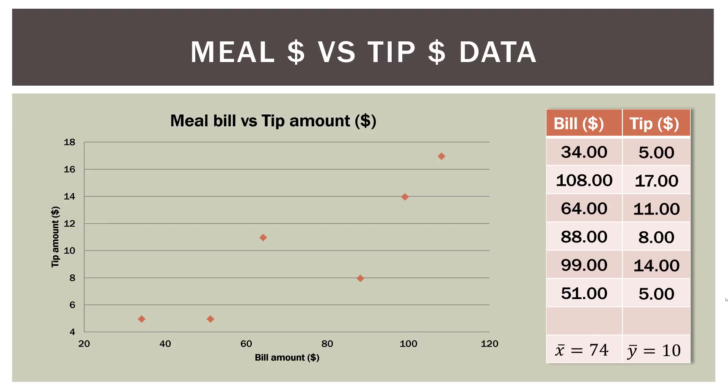This is the data we've been using in previous regression videos. You can see that we have a scatterplot. On the x-axis we have the bill amount, say in a restaurant, of what the meal cost. And then on the y-axis here on the left, we have the tip that the server, waiter, or waitress received for performing the service for the customer. For example, we have a bill that is $108, and the waiter or waitress received a tip of $17, so on and so forth.